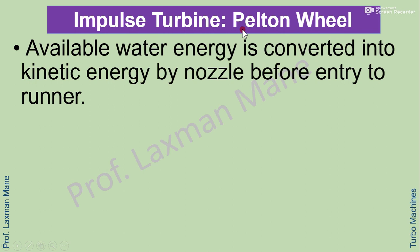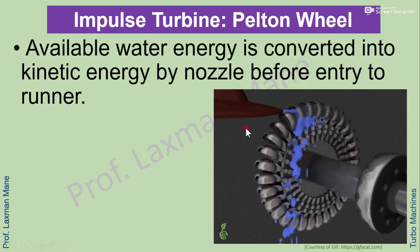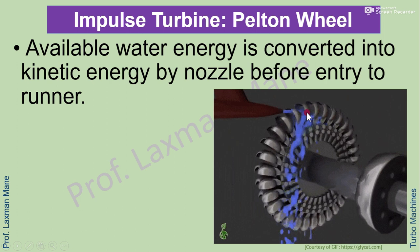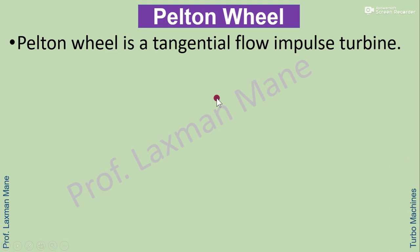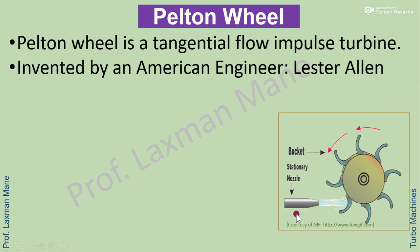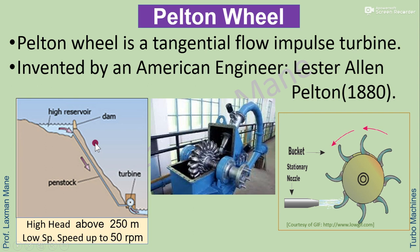Pelton wheel is one kind of impulse turbine. Available water energy is converted into kinetic energy by a nozzle before entry to the runner. Water is injected at the bucket, where conversion of kinetic energy into mechanical energy takes place. Pelton wheel is a tangential flow type impulse turbine invented by American engineer Lester Allen Pelton in 1880. It is suitable for high head, above 250 meters, and low specific speed up to 50 RPM.